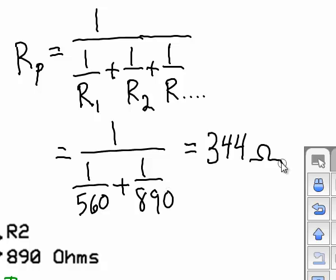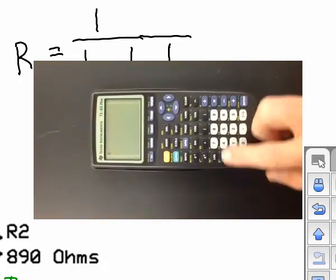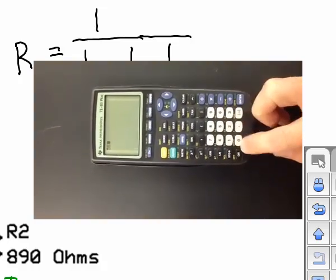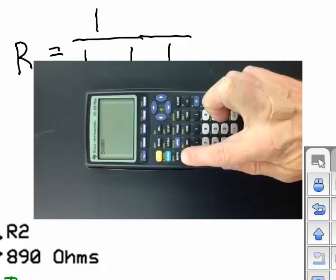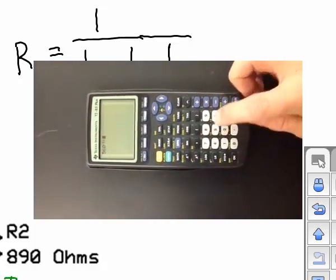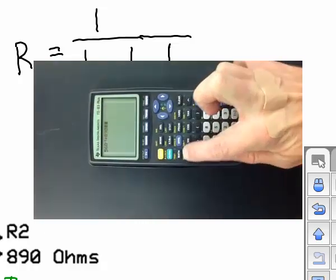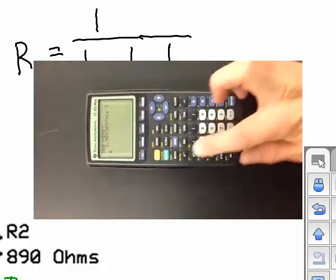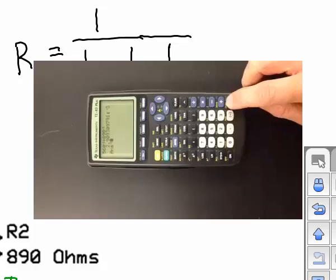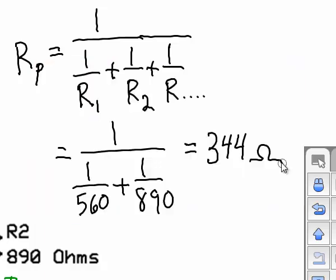Now to do this on the calculator, if you have a calculator that has a 1 over x button or a x to the minus 1 button, that just means to take the inverse. So you'd enter in 560, hit the x to the minus 1, plus 890, hit x to the minus 1, hit enter. That gives the bottom part of this equation, and then hit the x to the minus 1 button again to take the reciprocal of that, and we get 344 ohms.